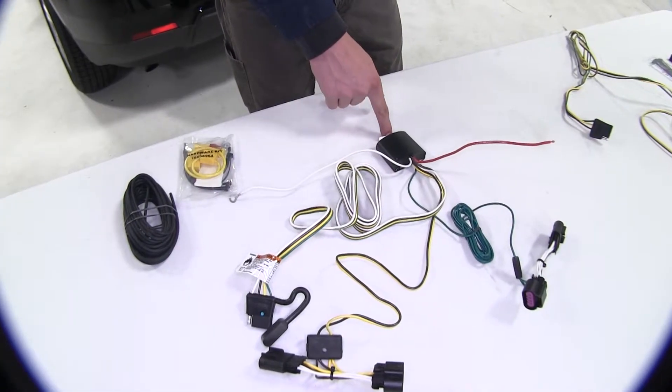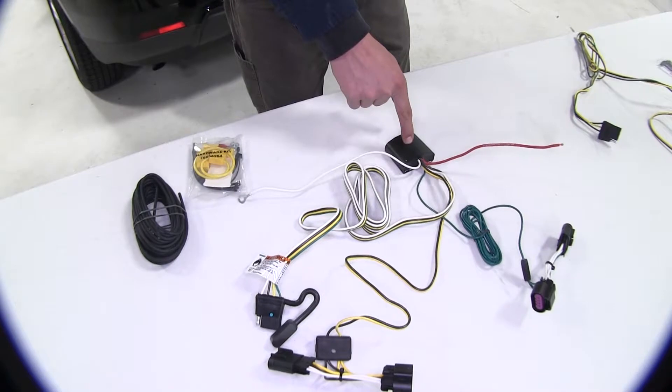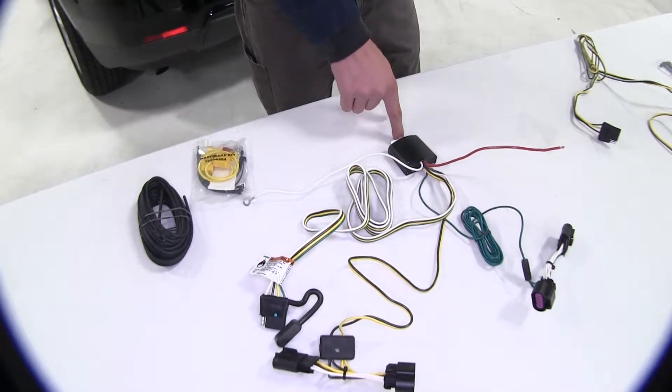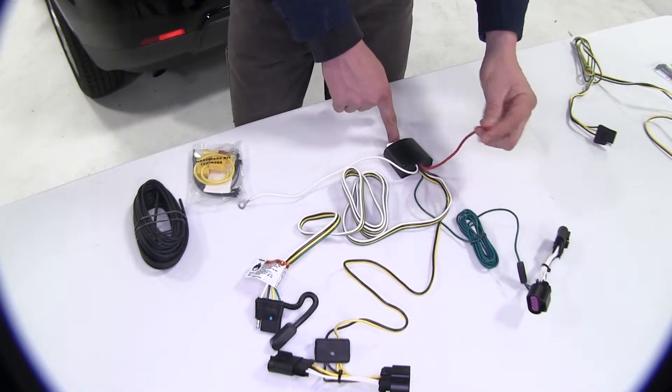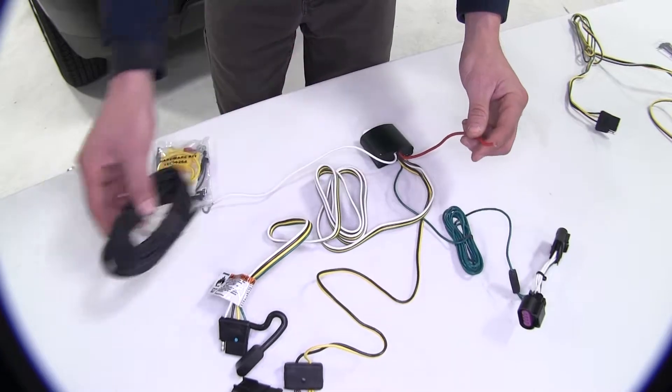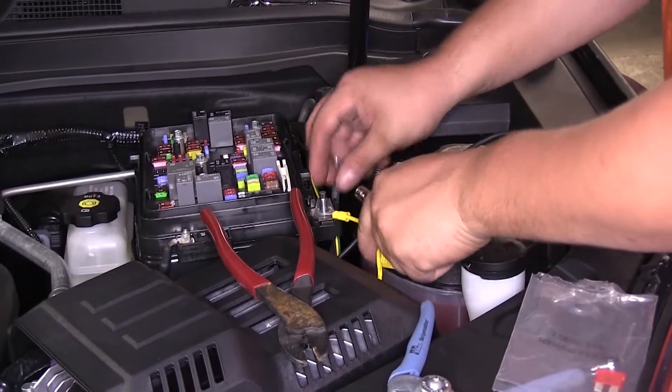Because the Tekonsha has the protective module box, it is going to have a longer and more involved install process. You've got to find a spot in the rear to mount your power module, then you've got to run a power wire up to your battery, run a fuse, and then you're set.